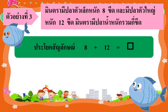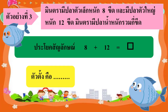ประโยคสัญลักษณ์ 8 บวก 12 เท่ากับเท่าไร จากประโยคสัญลักษณ์นะคะ จำนวนแรกคือตัวตั้ง ดังนั้นตัวตั้งในประโยคสัญลักษณ์นี้คือ 8 นั่นเอง และจำนวนหลังคือตัวบวก ดังนั้นตัวบวกในประโยคสัญลักษณ์นี้คือ 12 นั่นเอง